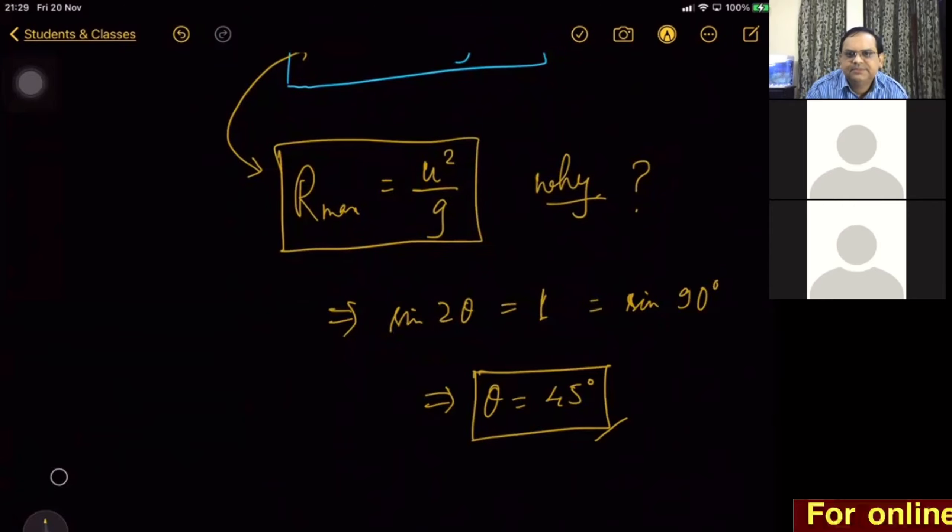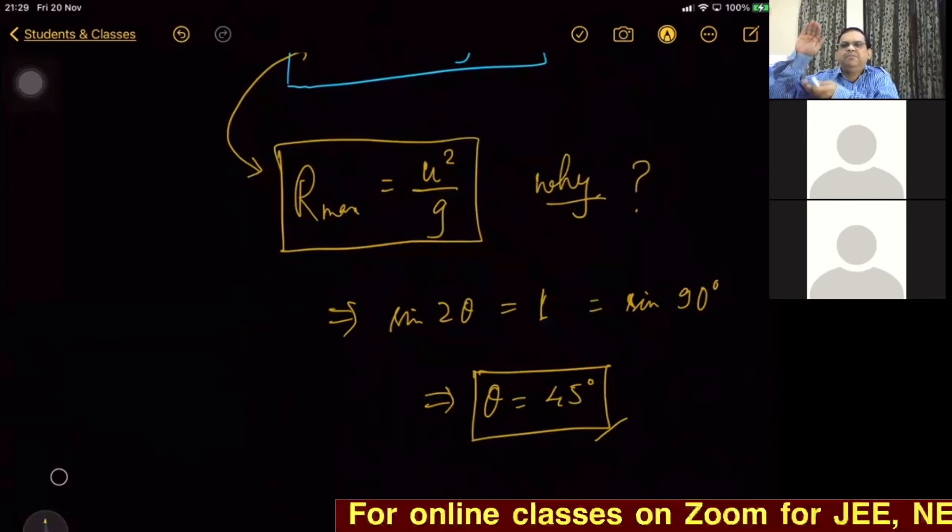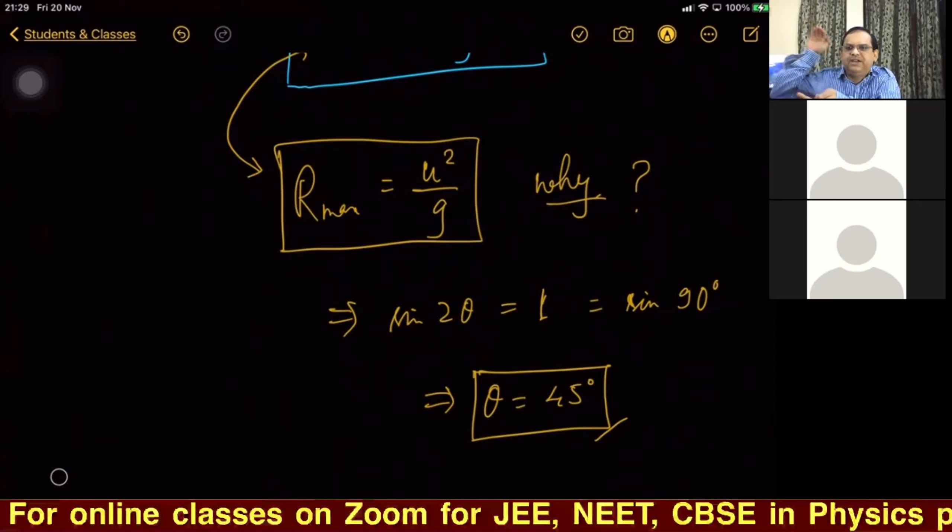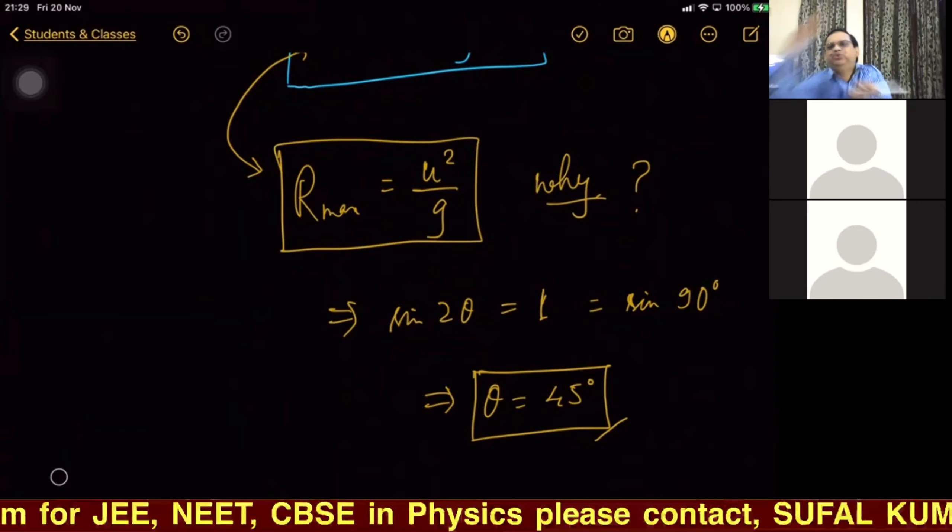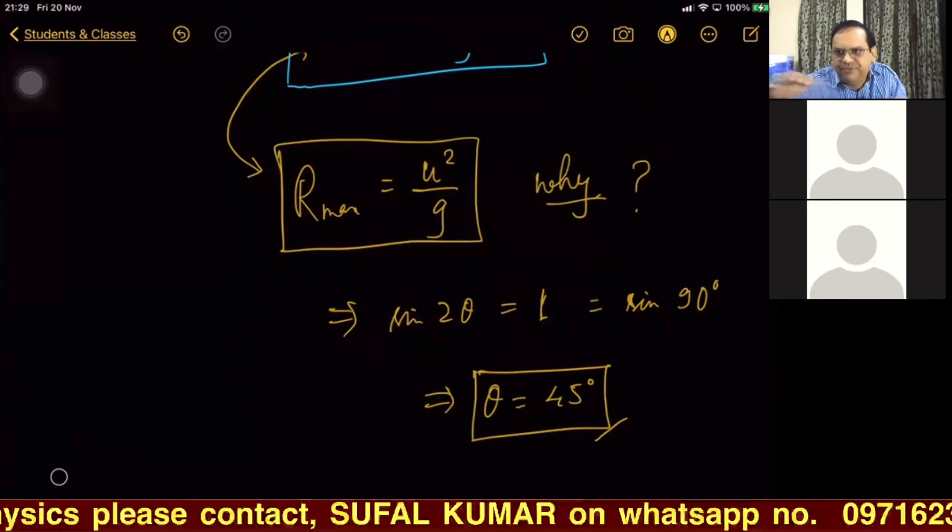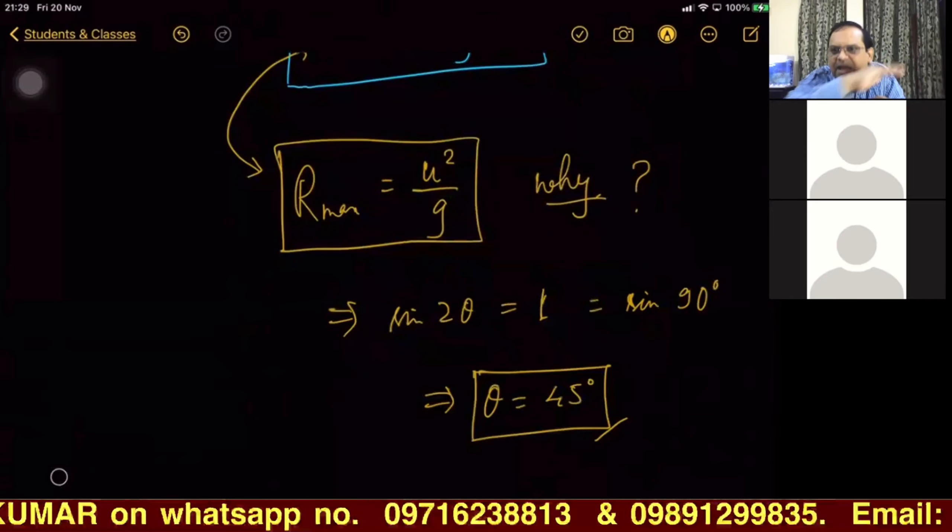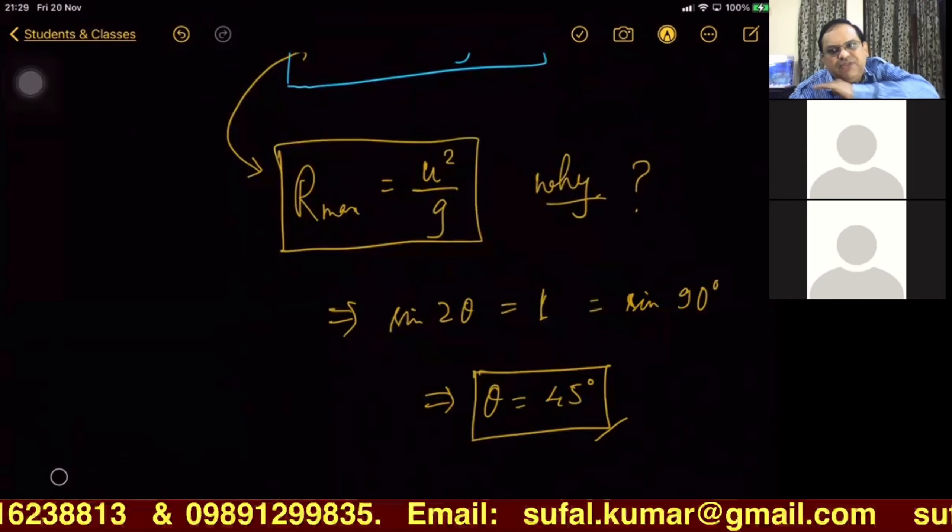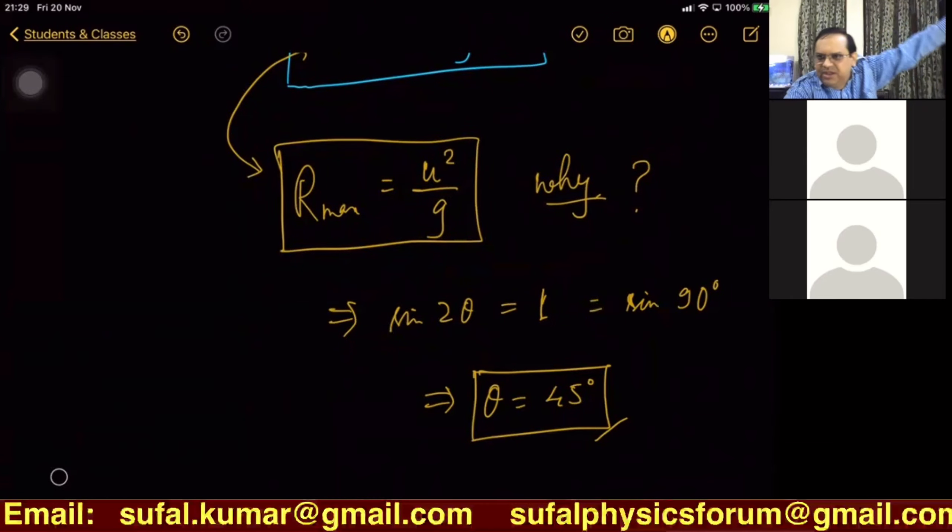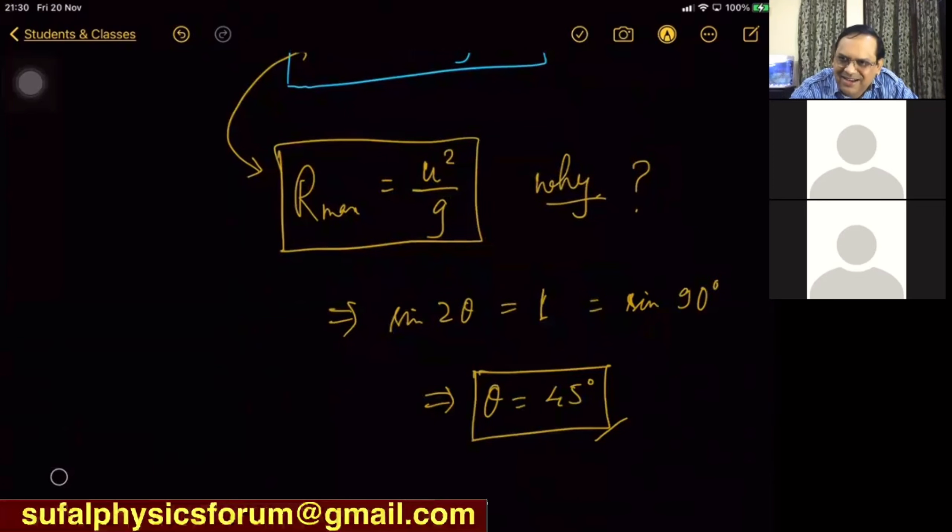What do we mean by this? Range will be maximum if we project the object at 45° from horizontal. That means if by making 45° angle, if you throw any object with horizontal making an angle 45°, it will go farthest, it will cover farthest horizontal distance.